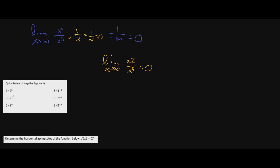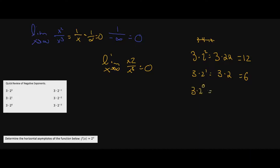There is a slight difference when dealing with exponential functions, and to make sense of that we'll do a quick review of negative exponents. Three times two squared is three times two times two — we get twelve. Three times two to the first is just three times two, which is six. Three times two to the zero: anything to the zero power is one, so we get three times one, which is three.